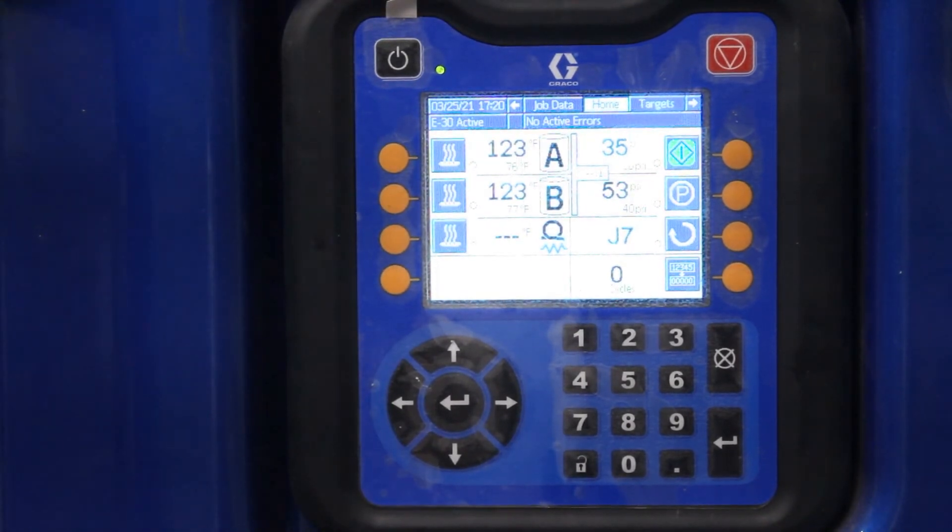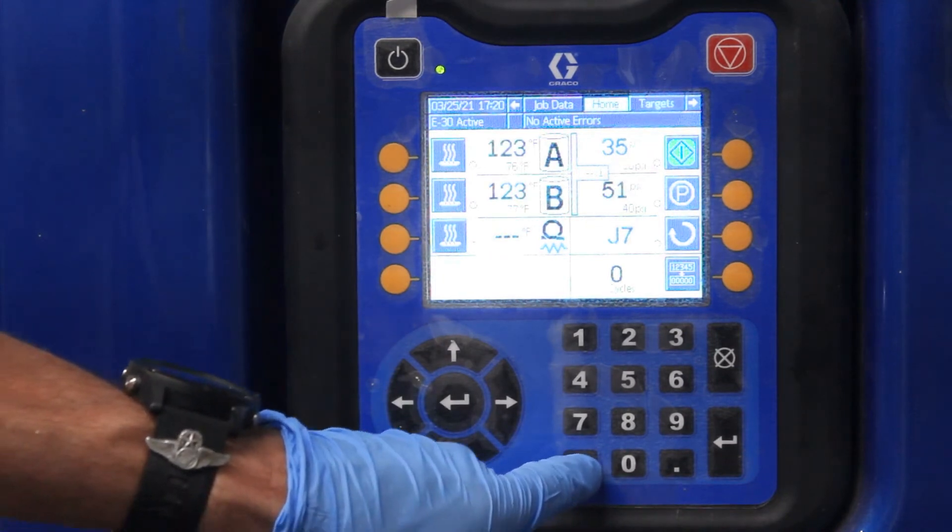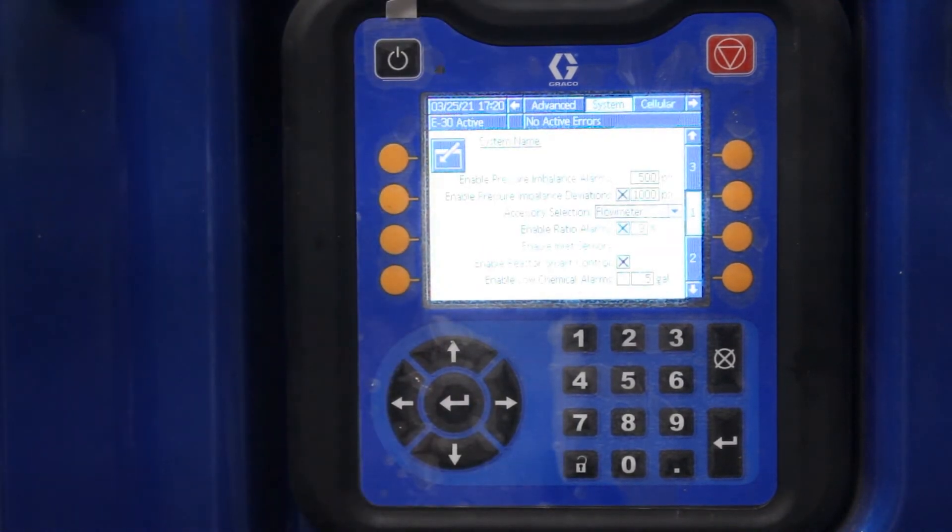There's another function here. There's a lock unlock button. You push this. This has everything from pressure imbalance, deviations, alarms, reactor control settings. Right here, enable low chemical alarm.